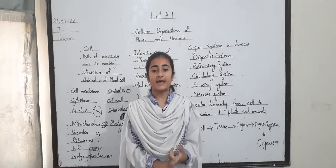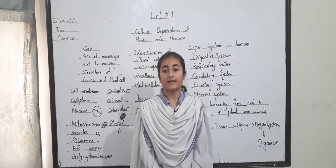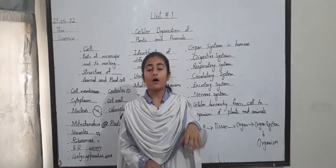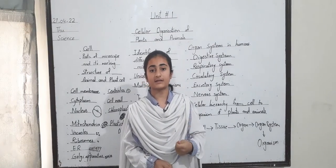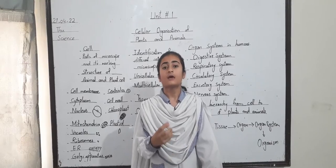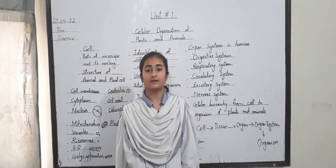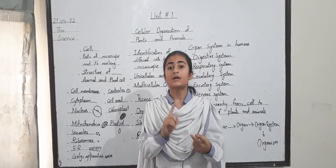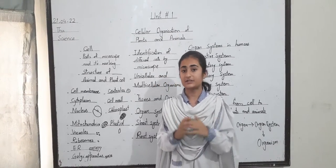Vascular bundle includes xylem and phloem tissue. Xylem tissue is in the roots, which absorb minerals and salts. Phloem transports glucose from the leaves to the whole plant body. Collenchymal cells are found in root, leaves, and stem, and they are oval in shape.